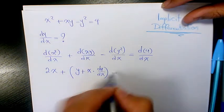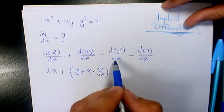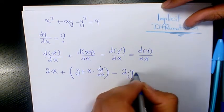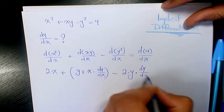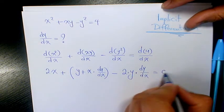Minus the derivative of y² with respect to x, which is 2y·(dy/dx), and that equals the derivative of 4 with respect to x, which is 0.